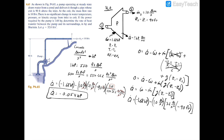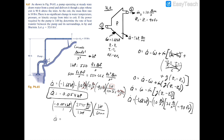To convert from horsepower to BTU per minute: take negative 0.054 horsepower, multiply by 2545 BTU per hour per horsepower, then multiply by 1 hour per 60 minutes. The horsepower and hour units cancel, leaving BTU per minute. The result is Q̇ equals negative 2.28 BTU per minute. The negative sign makes sense because heat is leaving the pump to the surroundings.